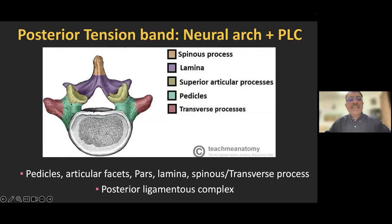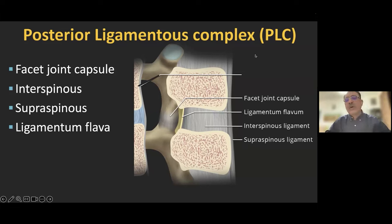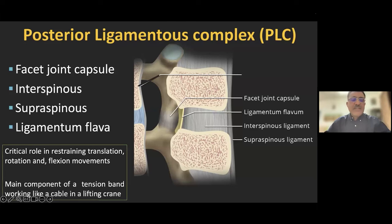The ligaments connecting structures from cranial to caudal constitute the posterior ligamentous complex or PLC, which includes the facet joint capsules, interspinous ligament, supraspinous ligament, and ligamentum flava. The supraspinous ligament connects the tips of the spinous processes; the interspinous ligament connects adjacent spinous processes; the ligamentum flava connects the lamina contiguously; and facet joint capsules strengthen the facet joints. All of these ligaments are critical in restraining translation, rotation, and flexion moment — the main components of the tension band working like a cable in a lifting crane.